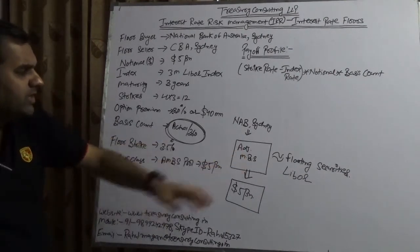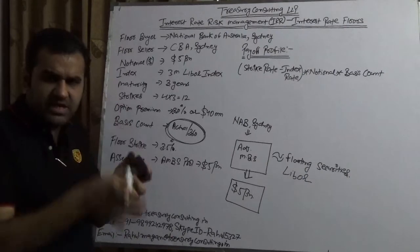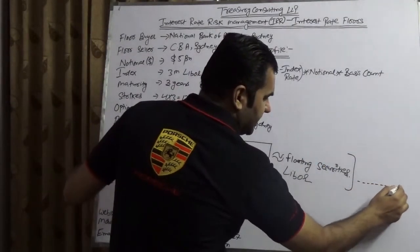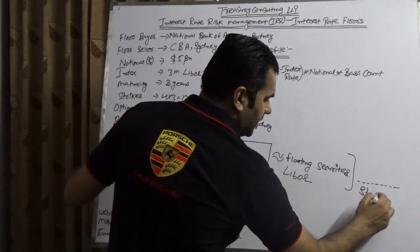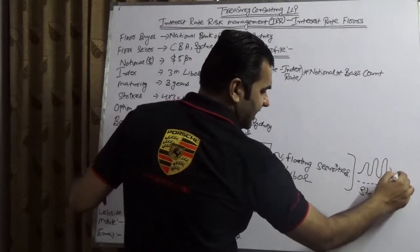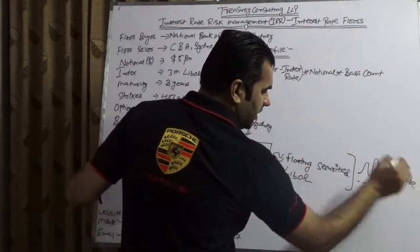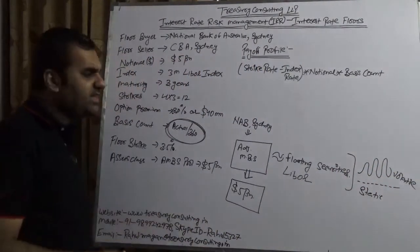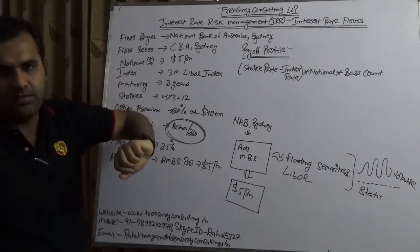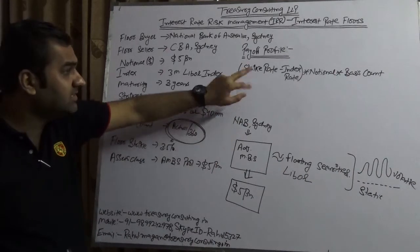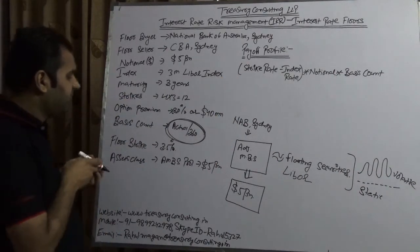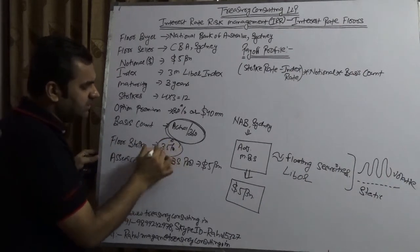NAB wanted to make sure that the income they are receiving stays static and is not volatile. In this case, NAB would be buying a floor. The formula is a little different here because things are changing. The floor strike they are keeping is 3.5%.